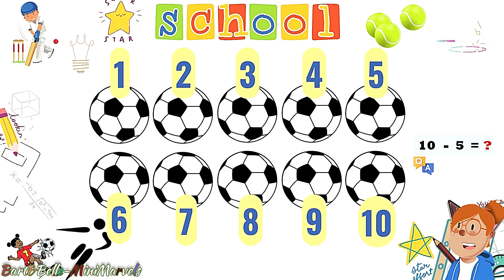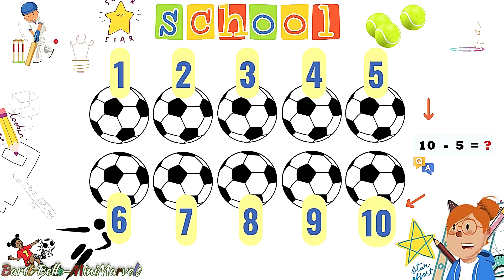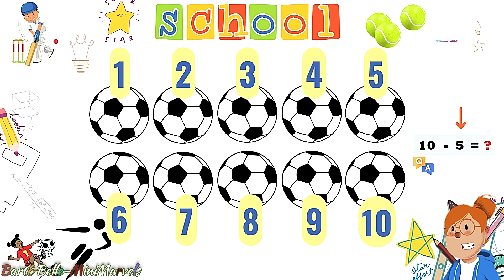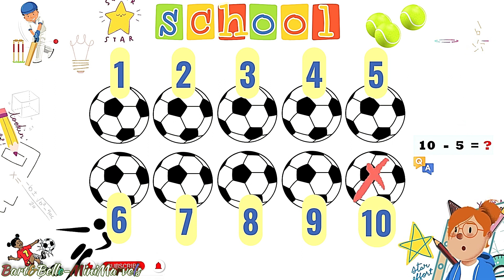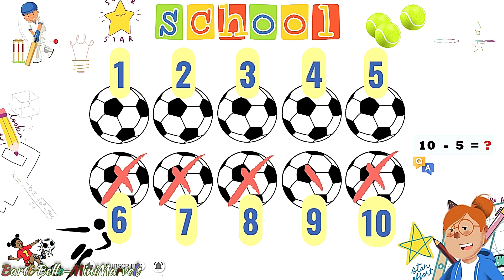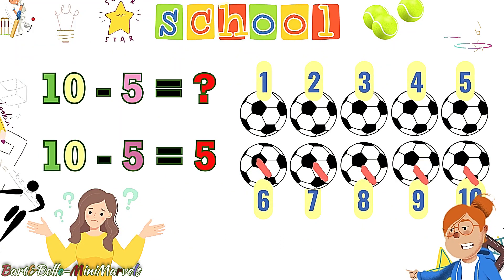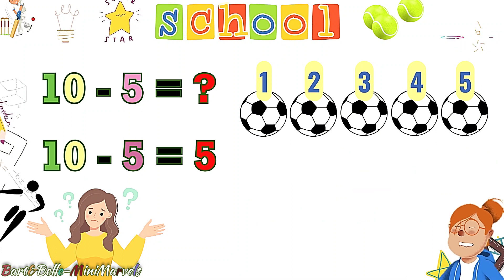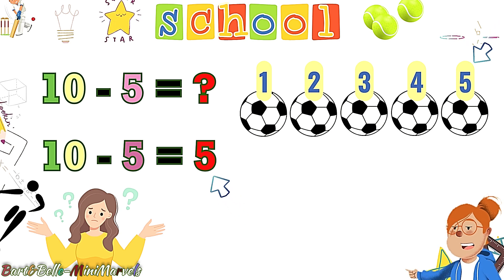To solve the question, let's put 10 footballs on the screen one last time. The 10 from the question determines the total number of footballs, and this 5 is showing the number we have to kick away to get the answer. We will simply kick 5 footballs. Let's do this! Yes! This way. Now let's count the remaining footballs: 1, 2, 3, 4, and 5. We have solved another question.